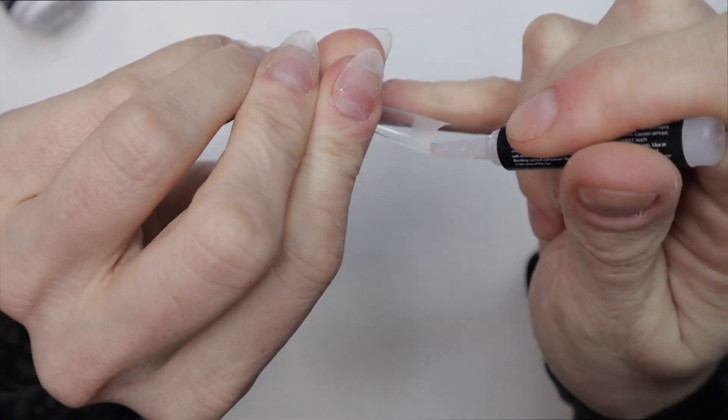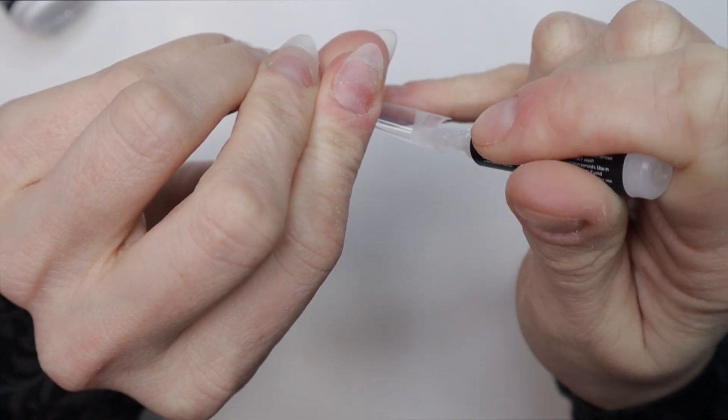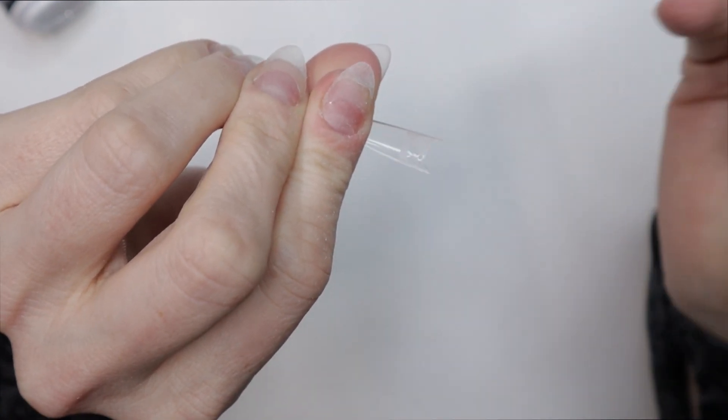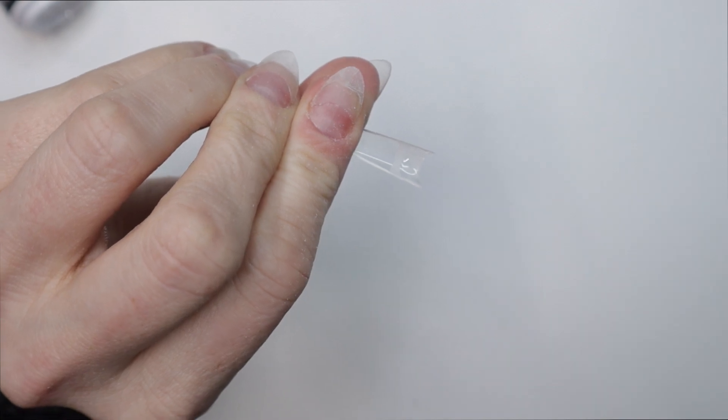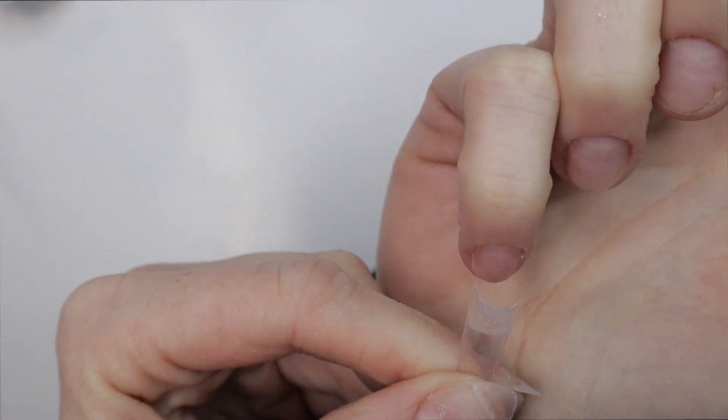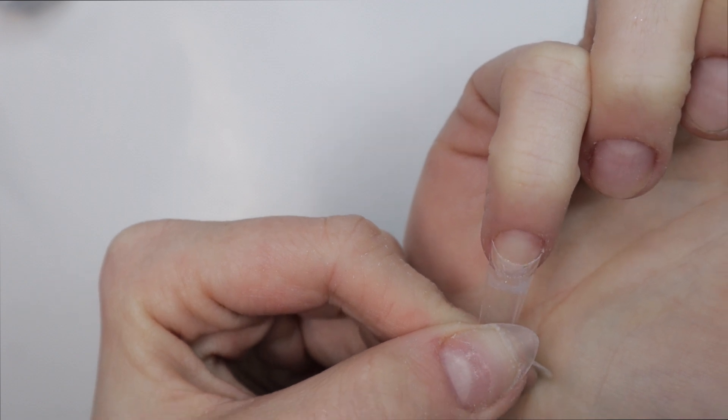I'm going to start off by using this press-on nail glue here. There's so many different ones out there, but I know that this one dries really fast, which is why I've chosen to use this one over the other ones that I have pulled out. I apply a dollop of nail glue to the underside of the tip.